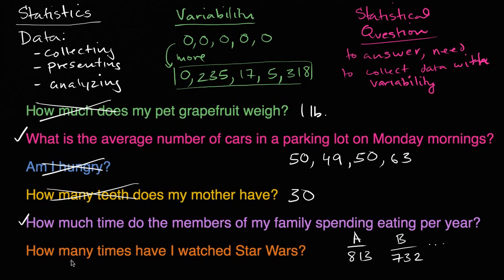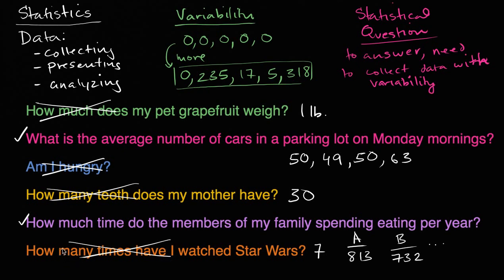Finally: how many times have I watched Star Wars? This is similar to how many teeth does my mother have — I just count the number of times I watched Star Wars, and maybe I watched it seven times. Just one data point, no variability. If I said on average how many times have my coworkers watched Star Wars, then I'd be collecting multiple data points with possible variability. But for this question — just one data point — it's not a statistical question. Hopefully that gives you a sense of statistics, variability, and what a statistical question even is.